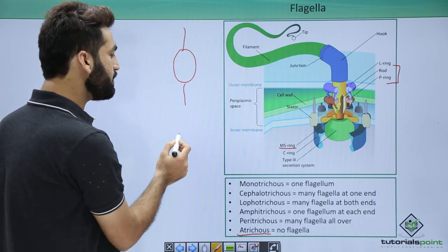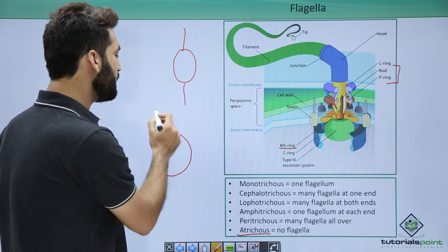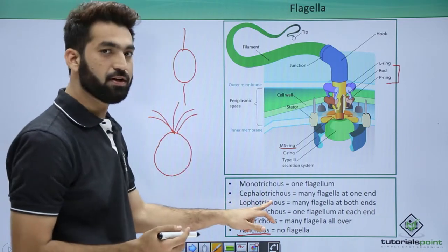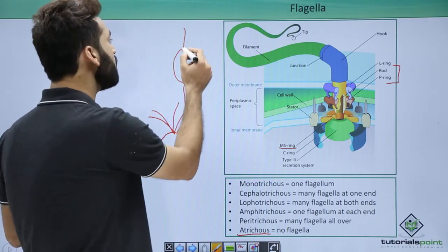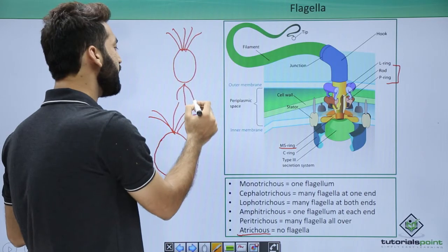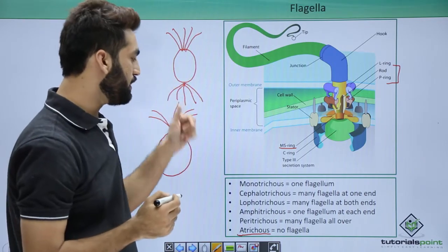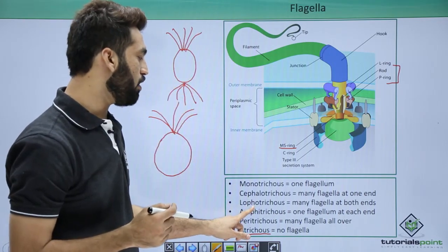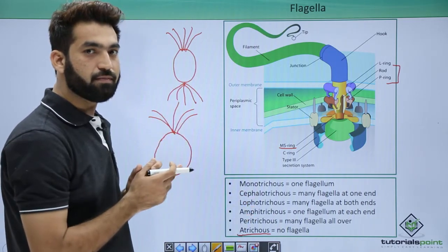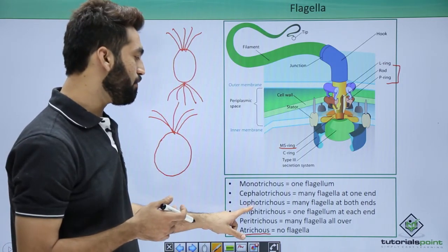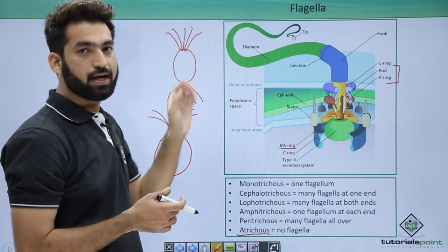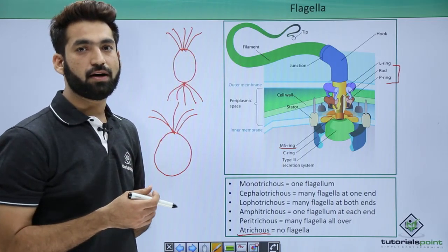In cephalotrichous bacteria, at one particular end you will see many flagella — a tuft of flagella at one end. In lophotrichous bacteria, there are tufts of flagella on both ends. In the next session we'll be discussing the shapes of bacteria.